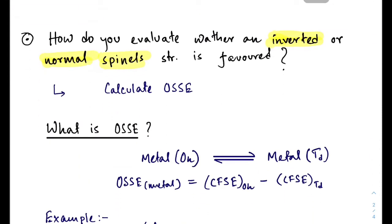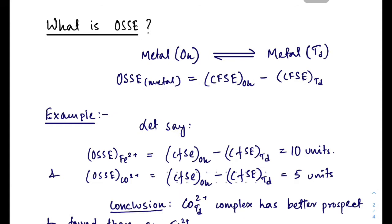To evaluate whether an inverted or normal spinel structure is favorable, we calculate the OSSE — Octahedral Site Stabilization Energy. A metal can reside in either an octahedral or tetrahedral hole. To calculate OSSE, we calculate the metal's CFSE at octahedral geometry minus the CFSE at tetrahedral geometry. Generally, CFSE in octahedral geometry is greater than in tetrahedral, so converting from octahedral to tetrahedral results in a loss of CFSE. This loss is the OSSE.